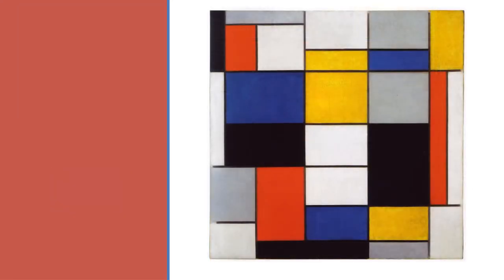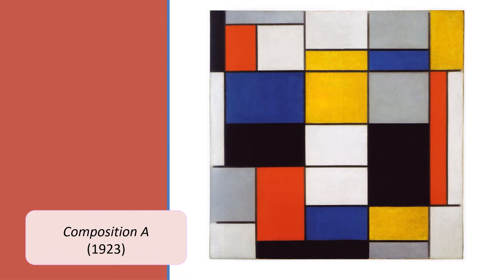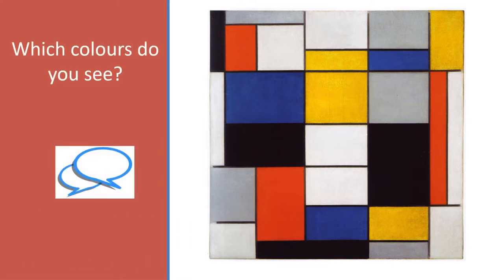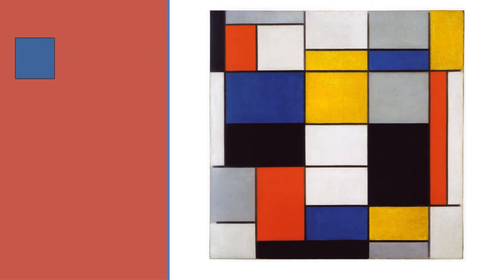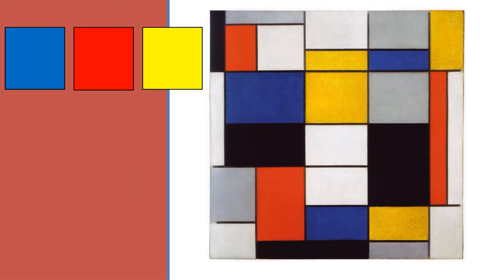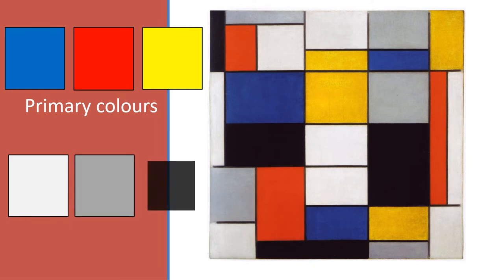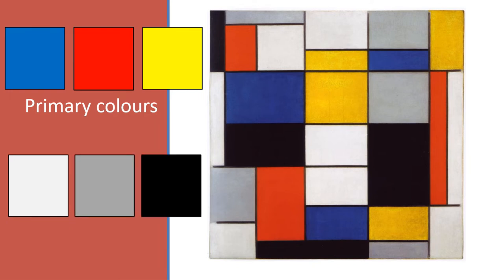Look at this painting from 1923. Which colours do you see here? You may have said blue, red and yellow. These colours are primary colours. You may also have noticed he has used white, grey and black. These are all known as neutral colours.